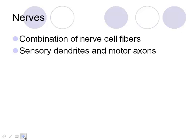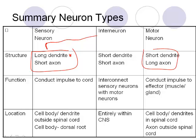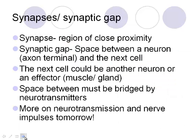A nerve is simply a combination of nerve fibers — sensory dendrites and motor axons grouped together. The sensory neuron has a long dendrite to travel toward the central nervous system and a short axon. Interneurons are very short, occurring in the spinal cord and brain. Motor neurons have a short dendrite and a long axon.